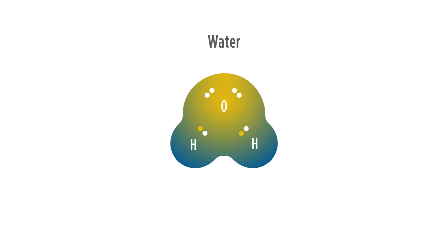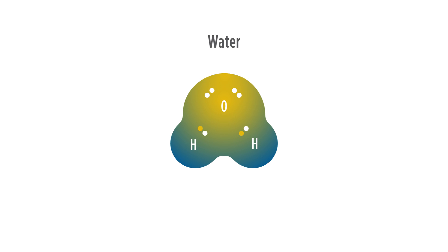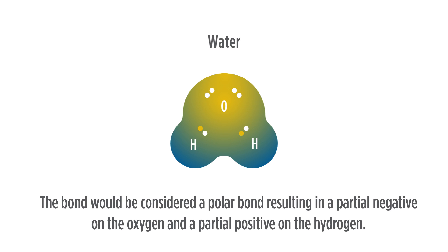For the O–H bond in water, the electronegativity difference between oxygen's electronegativity of 3.5 and hydrogen's electronegativity of 2.1 is larger than 0.5 and less than 2. Therefore, the O–H bond would be considered a polar bond, resulting in a partial negative charge on the oxygen and a partial positive charge on the hydrogen.